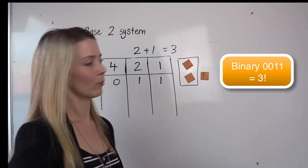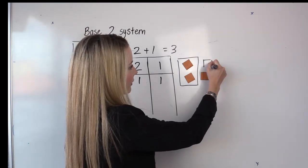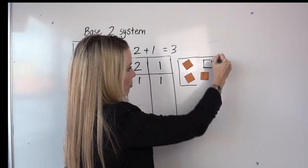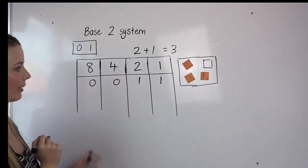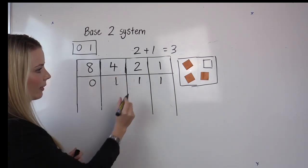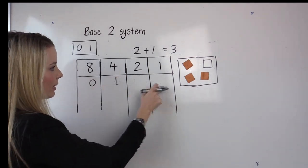Now if I add one more, then that means we have one group of four. And so I need to put one here and change these back to zeros.